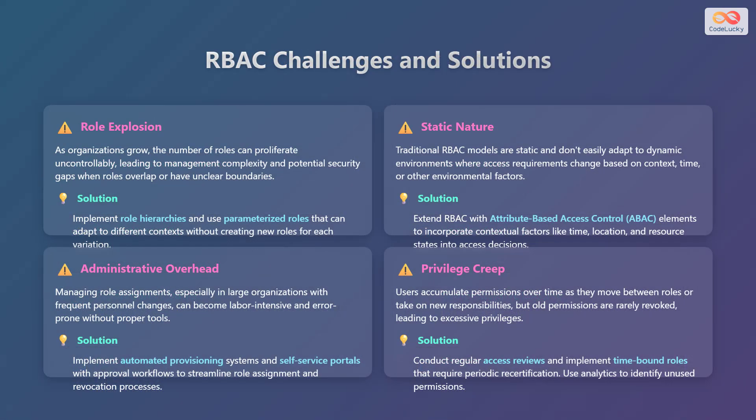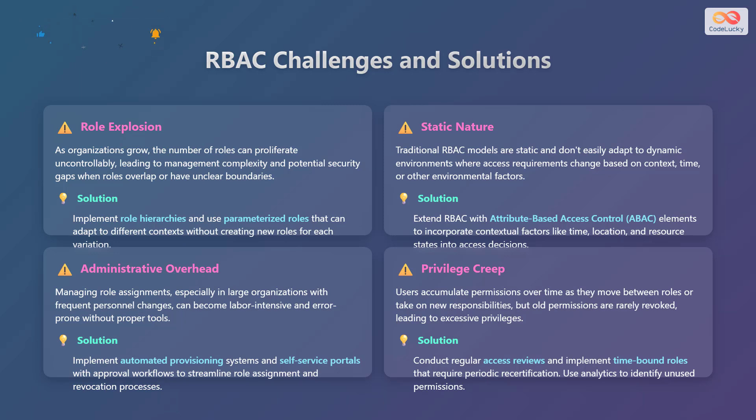RBAC comes with challenges. Role explosion, where the number of roles grows uncontrollably, can be addressed by implementing role hierarchies and parameterized roles. The static nature of traditional RBAC can be mitigated by extending it with attribute-based access control to incorporate contextual factors. Administrative overhead in large organizations can be reduced with automated provisioning systems and self-service portals. Finally, privilege creep — users accumulating excessive permissions over time — can be addressed through regular access reviews and time-bound roles.